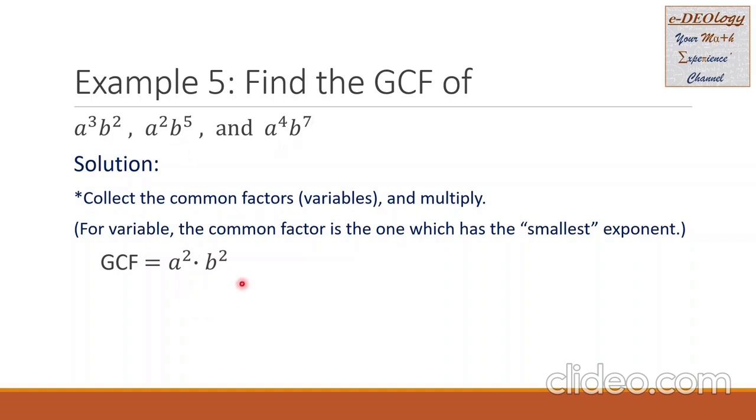Then we just combine them. So the GCF is a squared b squared.